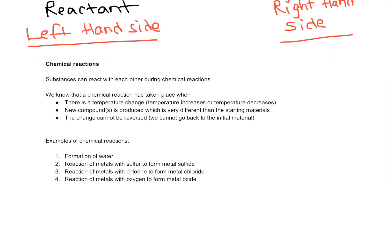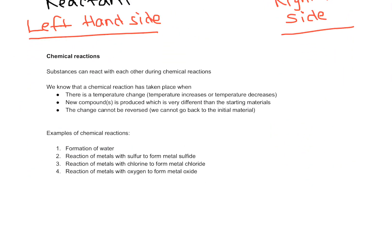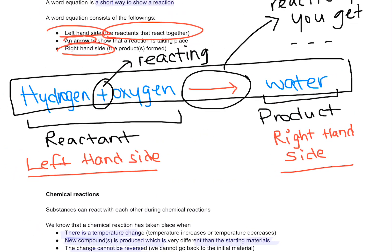Now let's see chemical reactions. When there is a chemical reaction, there is a temperature change — the temperature will go up or will go down. There are new substances that are produced, and the substances are going to be very different from the starting material. And the change cannot be reversed — you cannot go back. So once you have hydrogen and oxygen that react to form water, it is very hard to go back to the reactants.